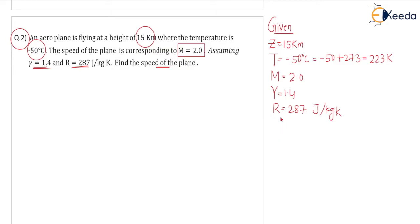Mach number is given, so first we will find the velocity of sound or speed of sound. C equals square root of gamma R T. So gamma is 1.4 times 287 times temperature 223 kelvin. From this we are getting the value of C, speed of sound, equal to 299.33 meters per second.